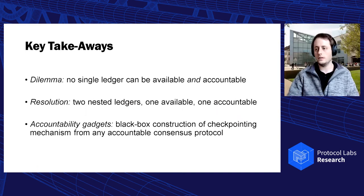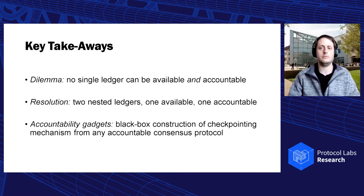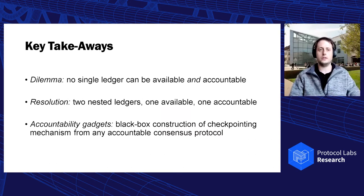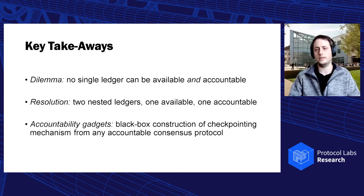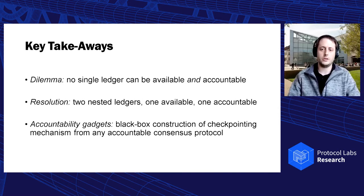In this talk, we will have three key takeaways. The first one is a dilemma: no single ledger protocol can be both available and accountable. The second point is a proposed resolution — instead of a single ledger protocol, how about two nested ledgers, one of which is available and the other accountable. And as a third point, I'll show a black box construction of such a checkpointing mechanism from any accountable consensus protocol — what we call accountability gadgets.